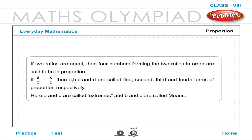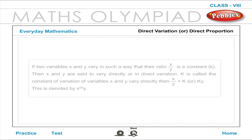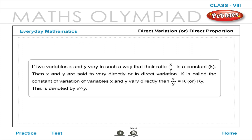Proportion: If two ratios are equal, then the four numbers forming the two ratios in order are said to be in proportion. If A by B is equal to C by D, then A, B, C and D are called the first, second, third and fourth terms of proportion respectively. Here A and D are called extremes and B and C are called means.